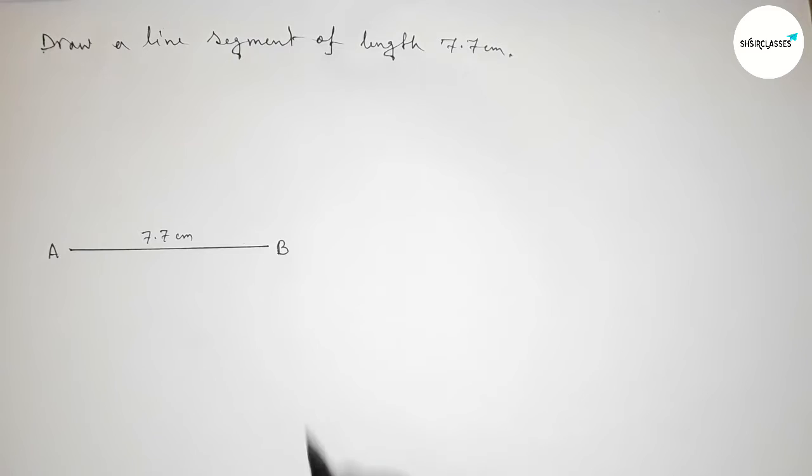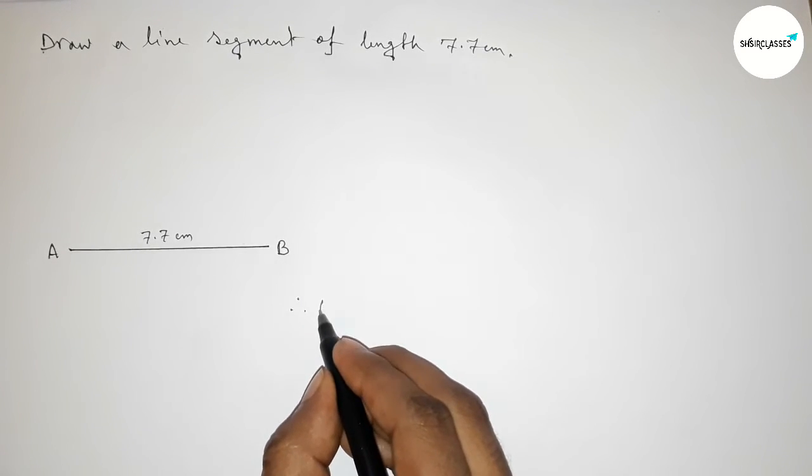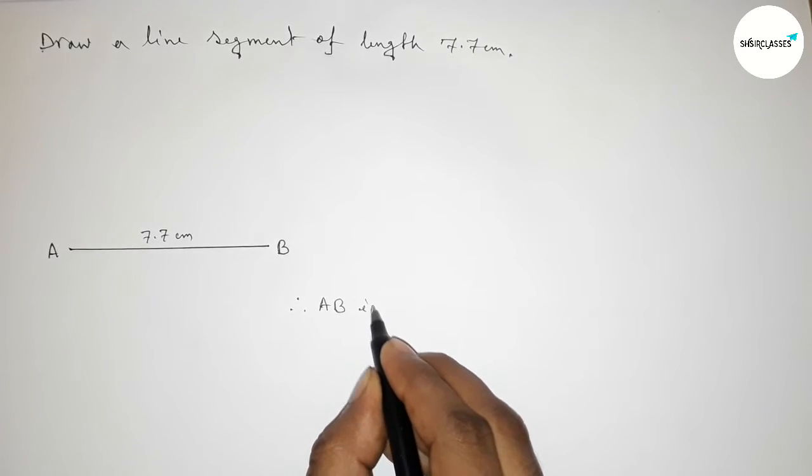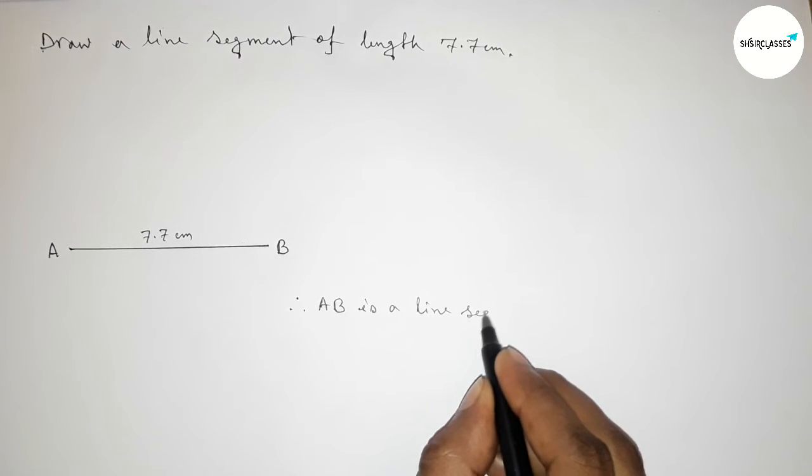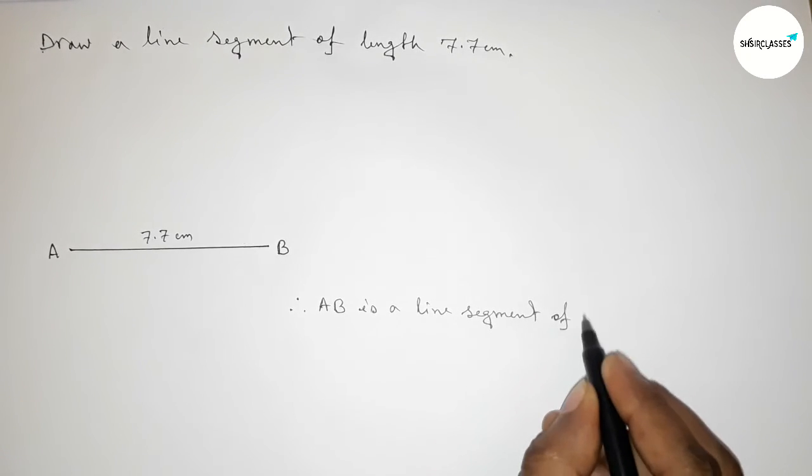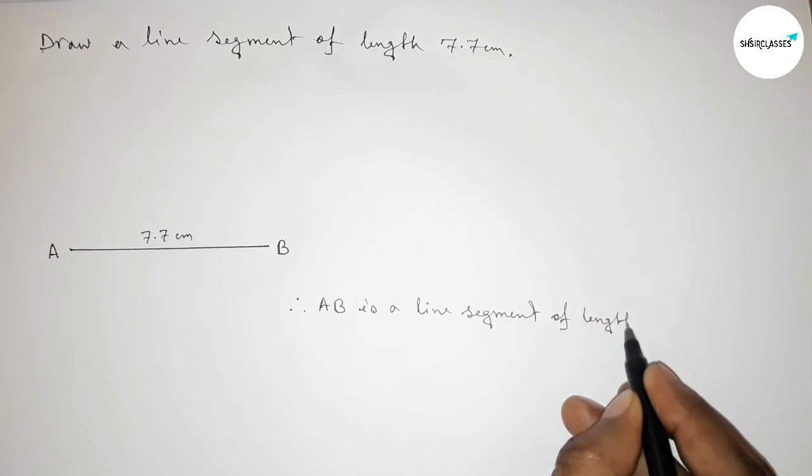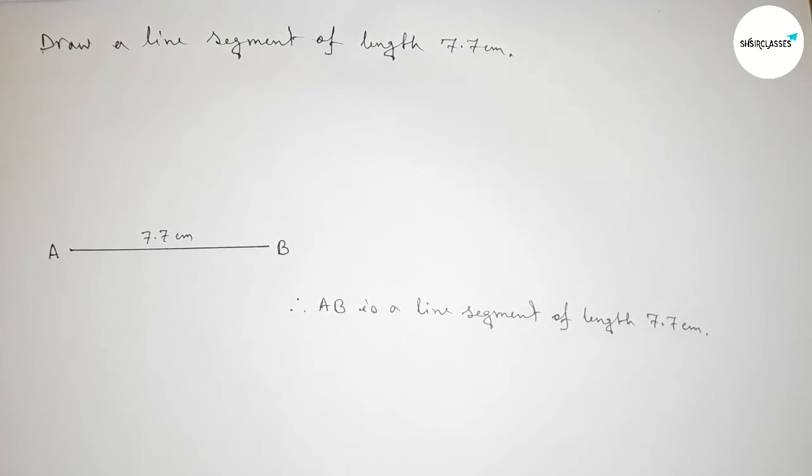Therefore, we can say that AB is a line segment of length 7.7 centimeters. With the help of a scale, you can draw this line in this way. That's all, thanks for watching.